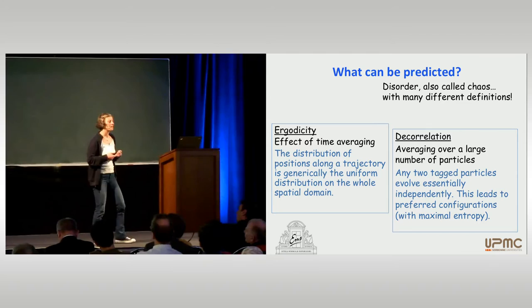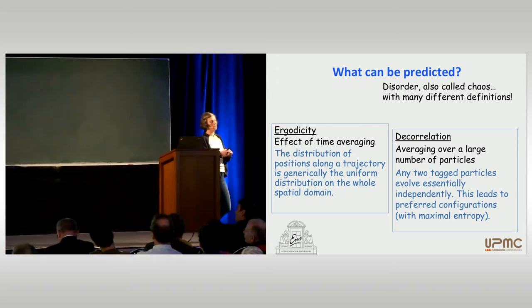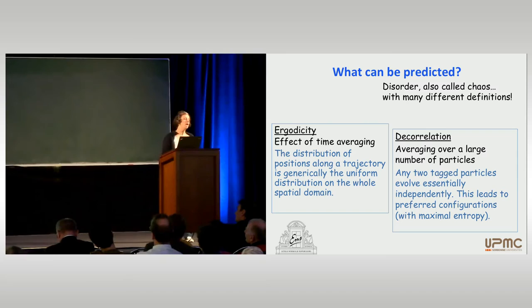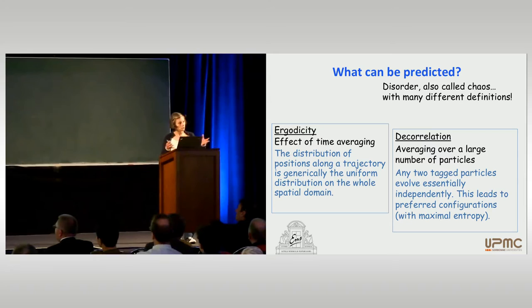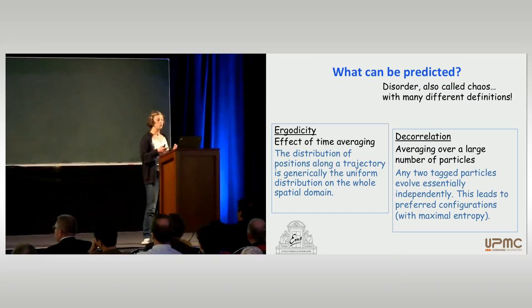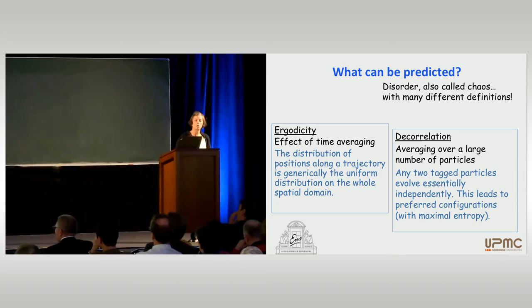Ergodicity tells you that if you start from any initial condition, or almost any initial condition, and then average with respect to time, you expect the trajectory to describe all the phase space, or at least all the invariant part of the phase space — restricting the phase space to some energy level plus possibly conditions due to the conservation of kinetic momentum. So this is something which tells you mixing property with respect to time.